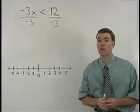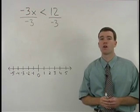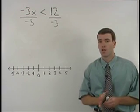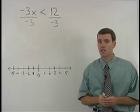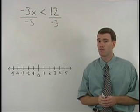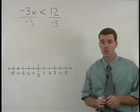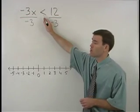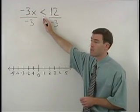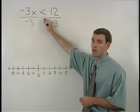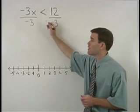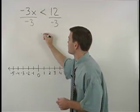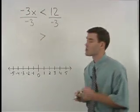But here's the rule you have to watch out for when solving inequalities. When you divide both sides of an inequality by a negative number, you must switch the direction of the inequality sign. So this less than in our original problem becomes greater than in our second step.